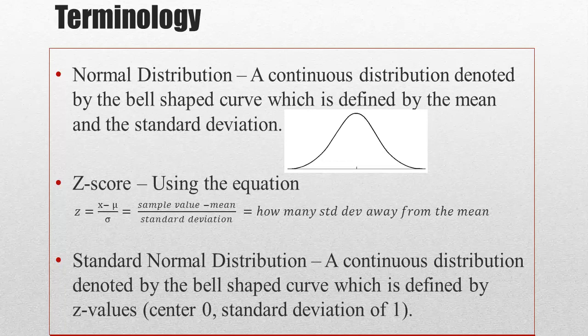Terminology. The normal distribution is that familiar bell-shaped curve. It's a continuous distribution and is defined by the mean and the standard deviation. So the mean is going to be that middle value, that little tick, and then the majority of our values are going to be found within three standard deviations on each side of that mean.